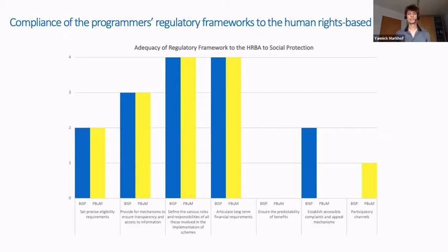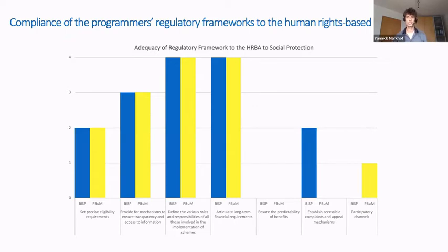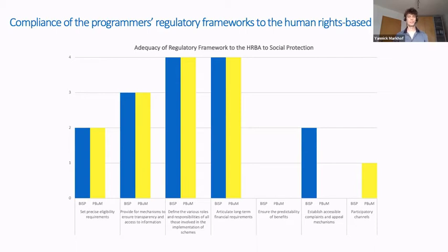For the two regulatory frameworks that do exist, it's important to assess their compliance with a human rights-based approach to social protection. Provincial social protection legislation is often concerned with administrative issues but is rather silent on specific program design features. This carries over into regulatory frameworks, where some issues in coordination or financial agreements are well regulated, while others are insufficiently covered — including specific eligibility requirements, predictability of benefits, complaints and appeals mechanisms, and participatory channels.